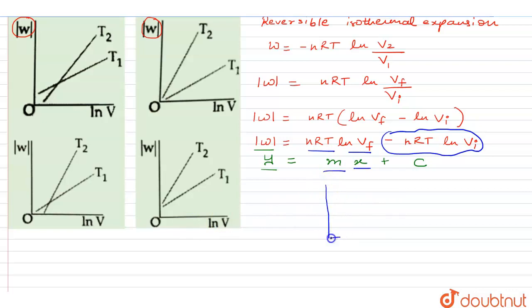So in that case, the plot should actually be in this manner when you plot your T1 and T2. T1 is less than T2, so it should be going in the downward axis.